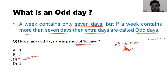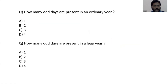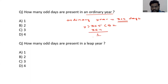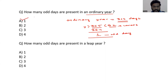Now let us find how many odd days are present in an ordinary year. An ordinary year means any year except a leap year. An ordinary year contains 365 days. Divide 365 by 7: 7 times 52 is 364, and the remainder is 1. So one ordinary year contains 52 weeks and 1 odd day. The answer is A — an ordinary year contains 1 odd day.